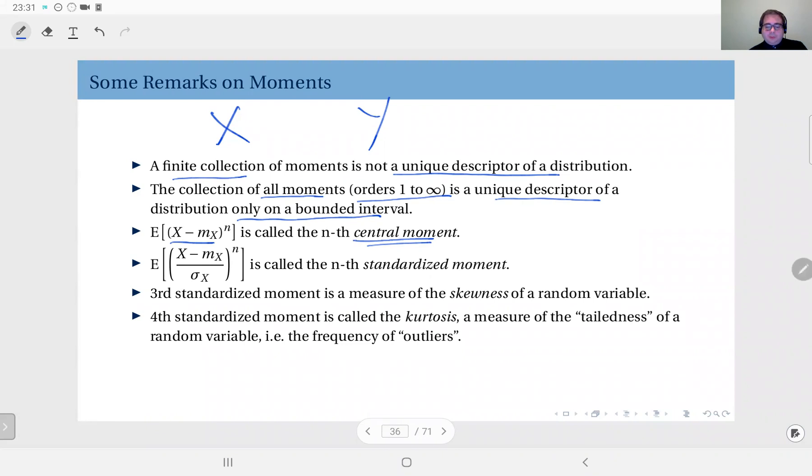So then when you compute the nth moment, what you get is the central moment. Of course, it should be obvious to you that the first central moment is always zero for any distribution because it's essentially the expected value of X minus its mean.